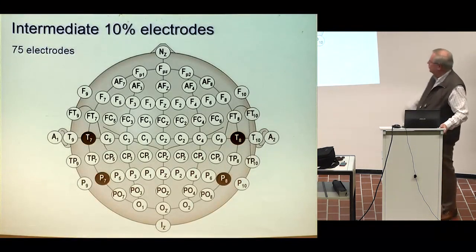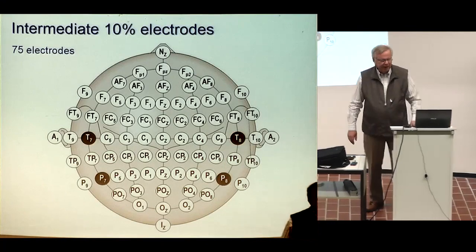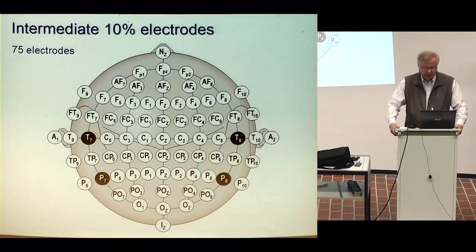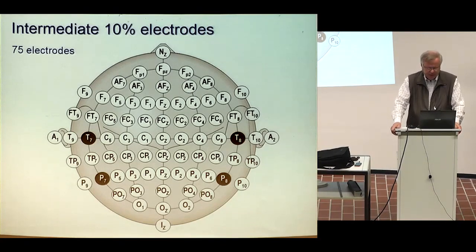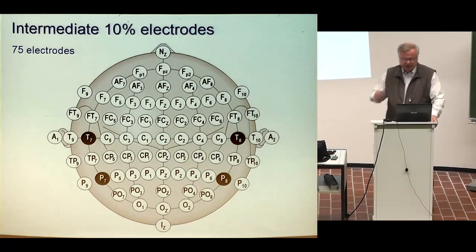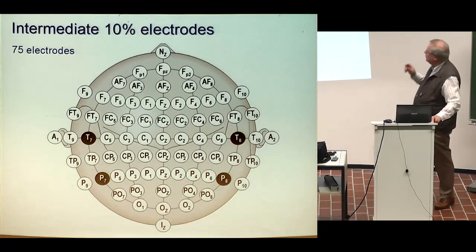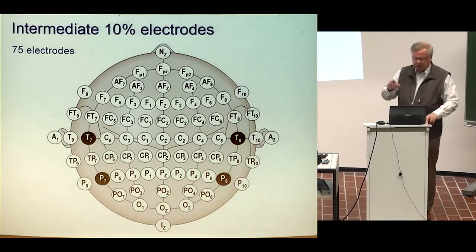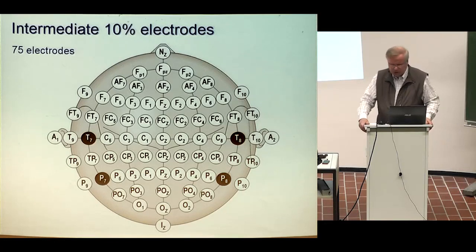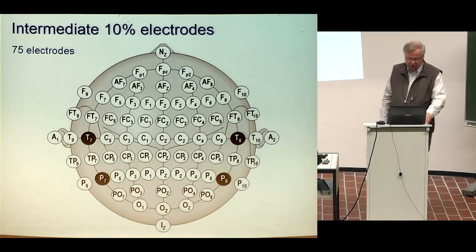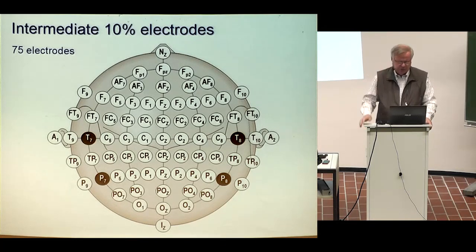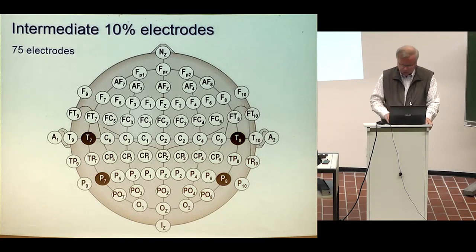So I come to the new material. After the Jasper system, the next more accurate system is the Intermediate Electrode System having 75 electrodes, where an electrode is added just in between each pair of the Jasper electrodes. 75 electrodes is quite a large number, but it is not so much used anymore. It is either the clinical Jasper system or the high-resolution systems with still more electrodes.